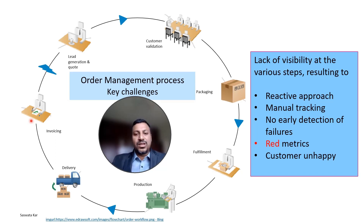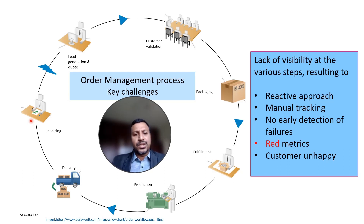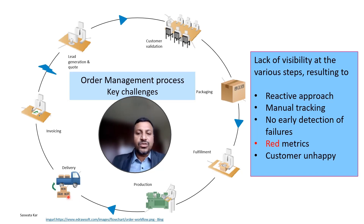Now what happens in a lot of traditional organizations is really each of these steps are discussed over phone, discussed manually. People don't know which step of the process a particular order is at. The next folks in the chain will only get to know about the previous step by talking over phone. And if there is a problem in this chain of activity, there will be a reactive approach to it. For example, if there's a problem with delivery, there will be no knowledge of where it went wrong — whether it was at the fulfillment stage or the customer validation stage. Typically, companies do a lot of manual tracking, and where it actually failed will not be known.